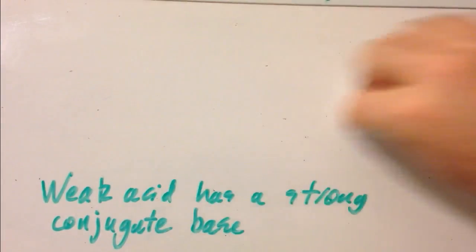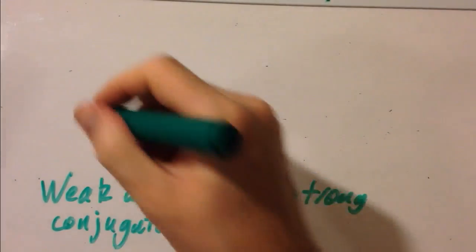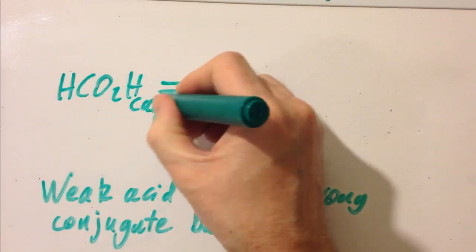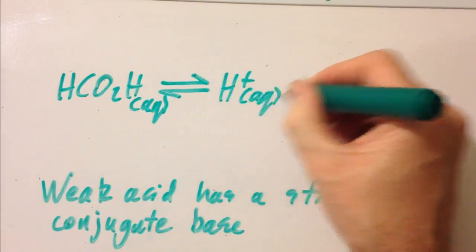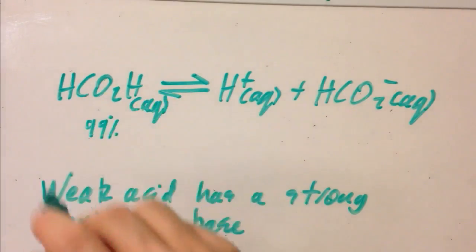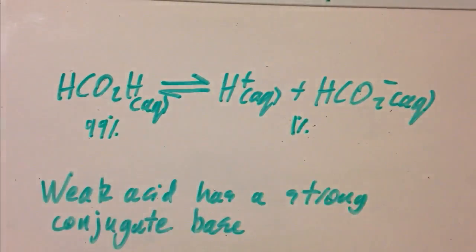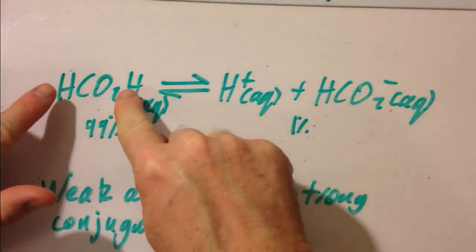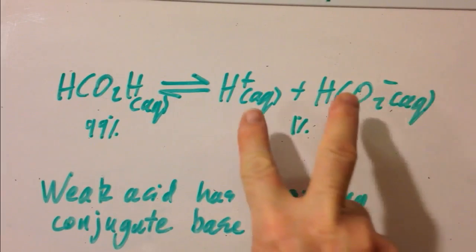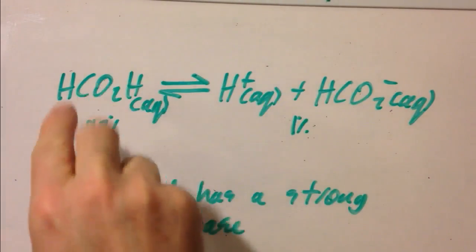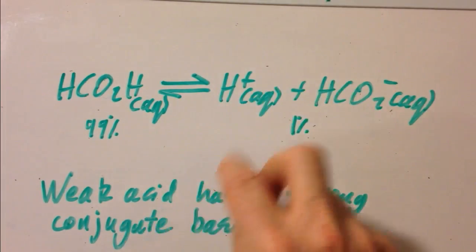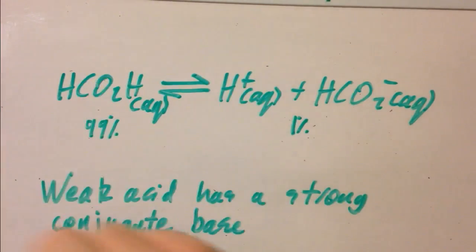The IB likes the weak acid methanoic acid, HCOOH. It's weak, so it's partially dissociated. In this case, 99 percent of it is undissociated and only one percent is dissociated. So that's the weak acid, which means it must have a strong conjugate base. A strong conjugate base wants to react with the H⁺ and return to the undissociated form — and you can tell because almost all of them do go back.